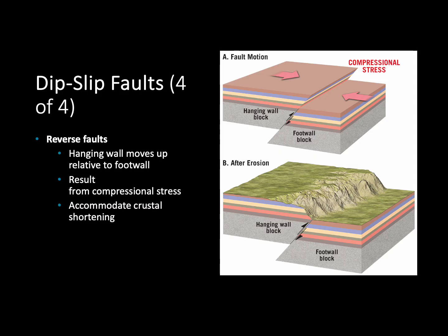Our second type of dip-slip fault is called a reverse fault. In the case of a reverse fault, our hanging wall is moving up and our foot wall is moving down. This is going to form due to compressional stress — when we're squeezing these broken pieces closer together, it causes the hanging wall to move up and the foot wall to move down, shortening our crust.